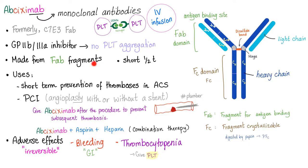Abciximab is formerly known as C7E3-Fab. It's made of Fab fragments — the Fab being the fragment for antigen binding, part of the antibody. It's a GP2B3A inhibitor; therefore, no platelet aggregation; therefore, no blood coagulation. Abciximab has a short half-life.